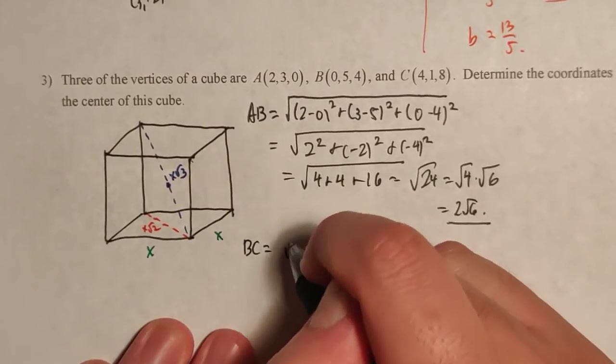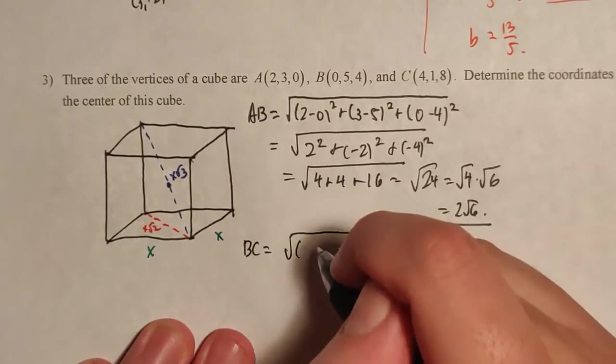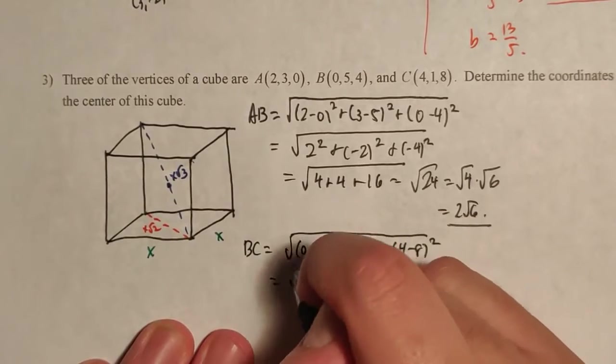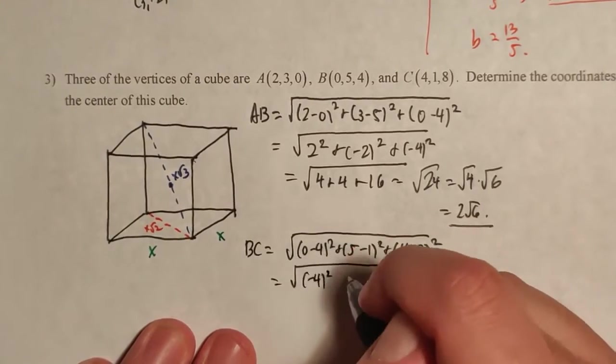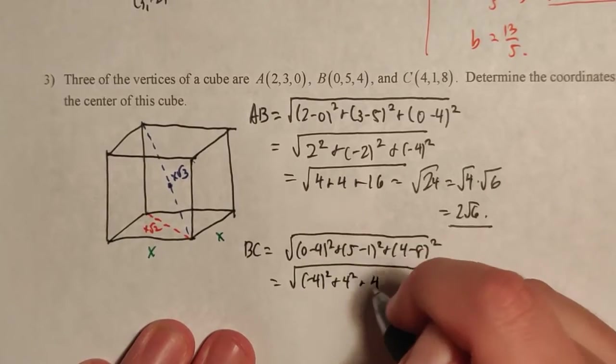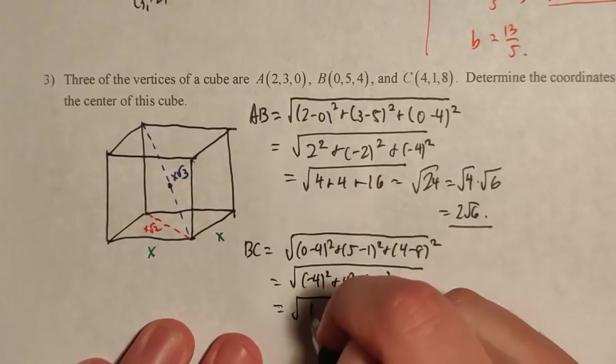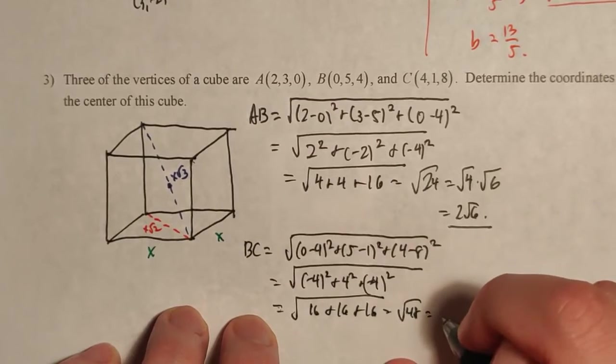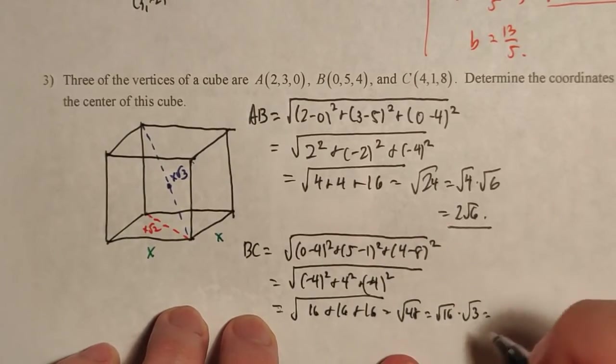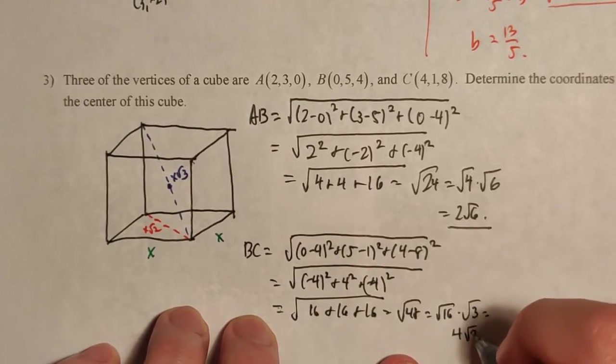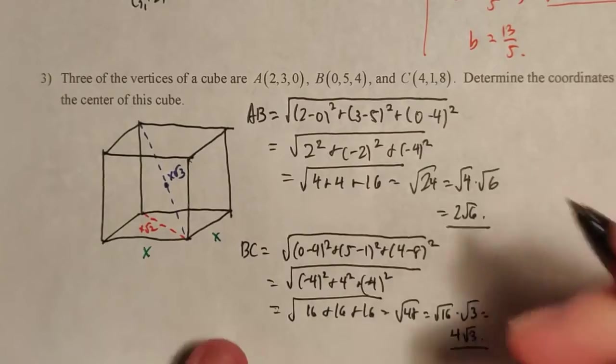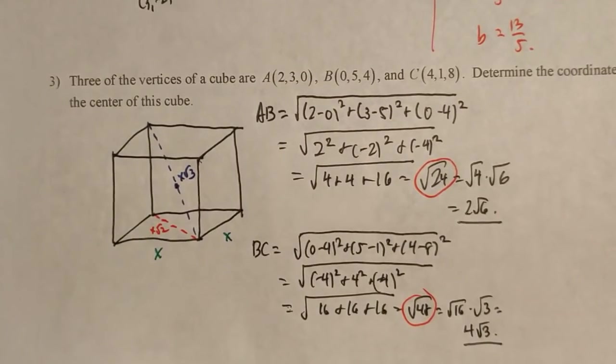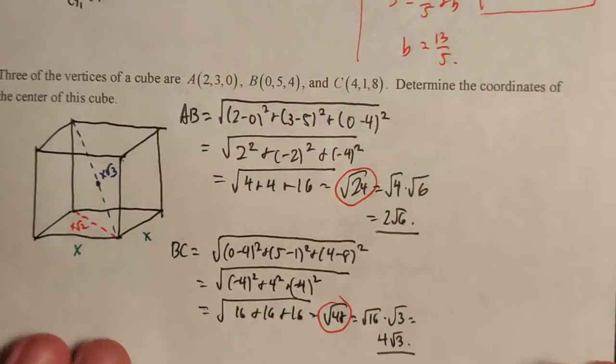Let's look at BC now. BC, we do the same thing, do the calculation. BC is going to be 0 minus 4, 5 minus 1, and 4 minus 8. So there's minus 4 squared plus 4 squared plus negative 4 squared. We see that is the square root of 16 plus 16 plus 16, which is radical 48, which we can yank out a 16. This here is 4 radical 3. I'm actually going to keep these as well because I look at this and I see that radical 48 is square root of 2 times radical 24. That gives us some hope.